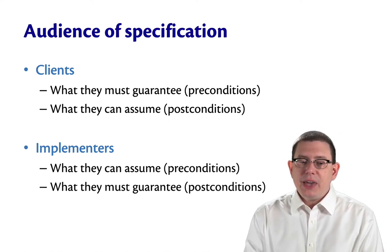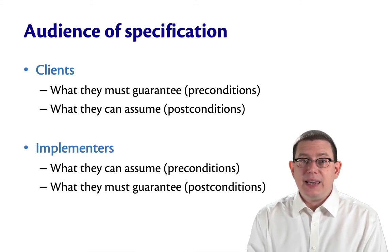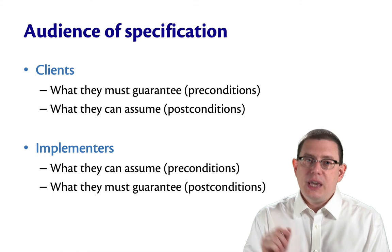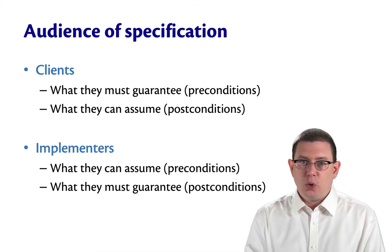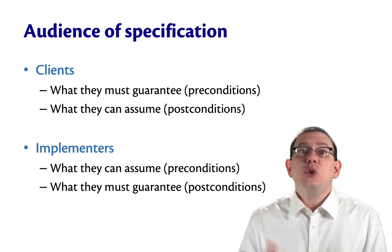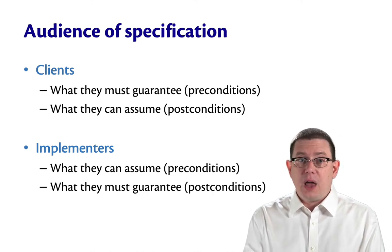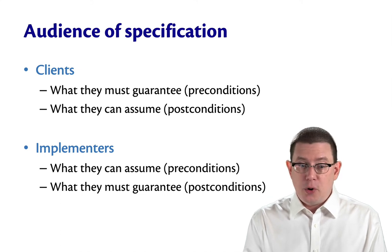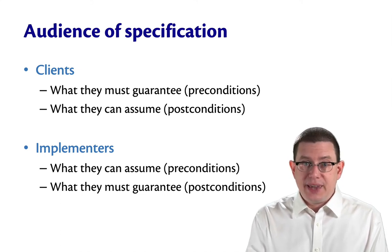That's the client's fault. And the specification tells the implementer what they must guarantee as a postcondition. So now it's the implementer's responsibility to arrange for something to hold, not the client's. So there's a kind of duality going on here between clients and implementers, between preconditions and postconditions, between assumptions and guarantees.